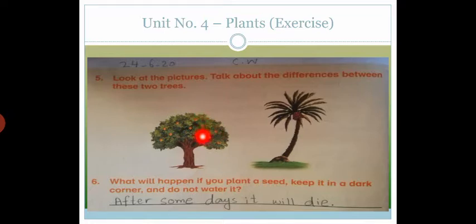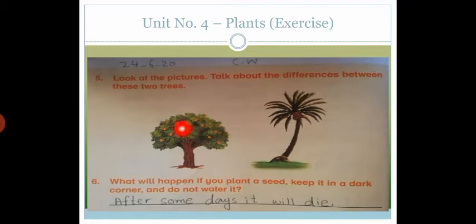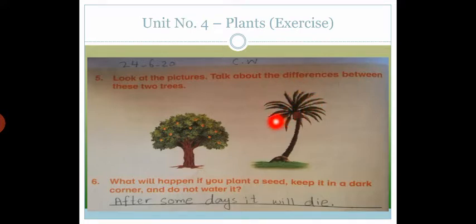This is a short tree. The length of the tree is short, and this is a tall tree. Now, this tree has a trunk and this tree has a stem. Now look at this: this tree has many leaves and this tree has some leaves. And this tree has long leaves. So this is the main difference between these two trees.